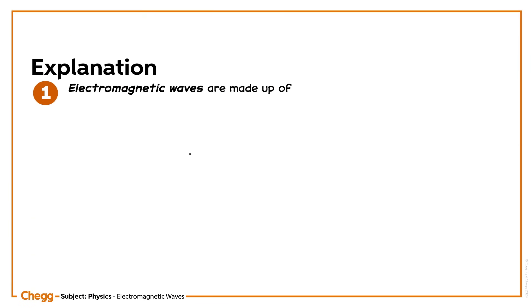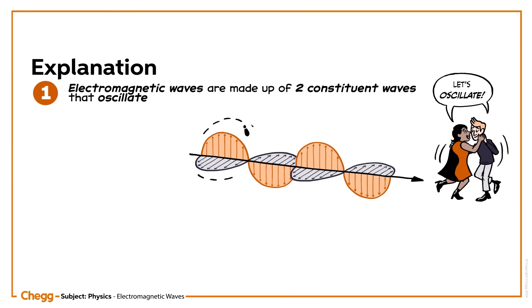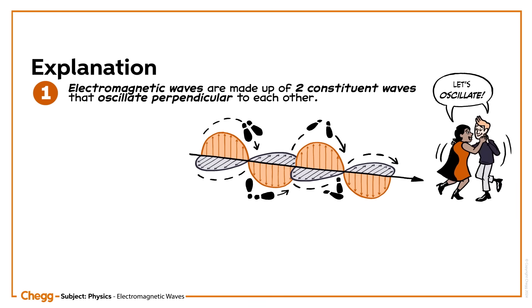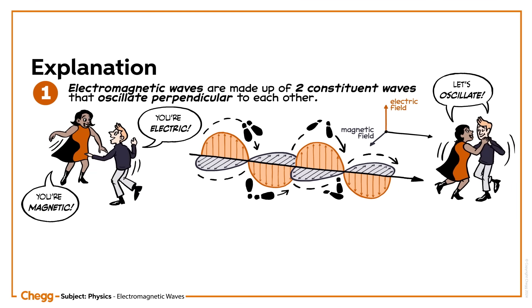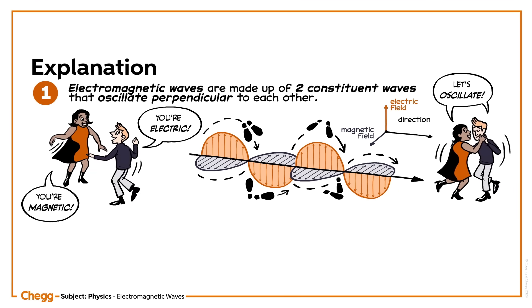Electromagnetic waves are made up of two constituent waves that oscillate perpendicular to each other. One is an electric field and the other is a magnetic field. They both move in the direction of propagation.